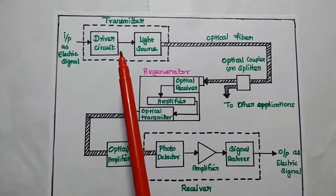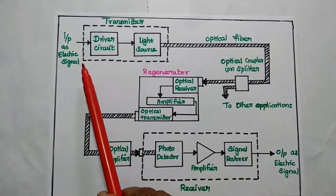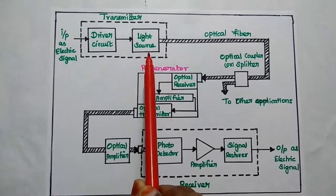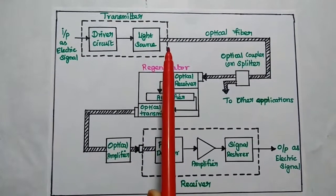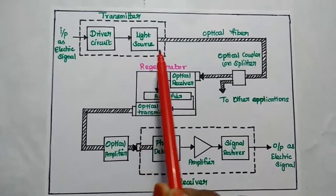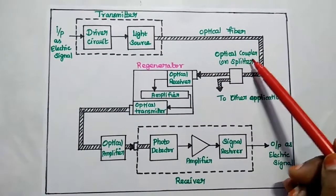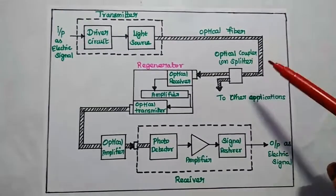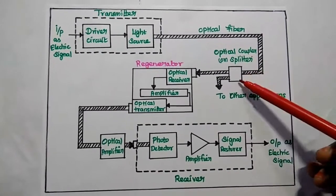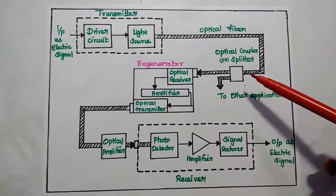The driver circuit drives the electrical signal from the source to the light source. The light source can be either LED or laser to convert the electrical signal into optical signal by varying the current flowing through it. This optical signal is transmitted through the optical fiber, which is the communication channel. We also have optical passive devices like coupler and splitter. If you want to use the same optical signal for other applications, we can use this splitter.